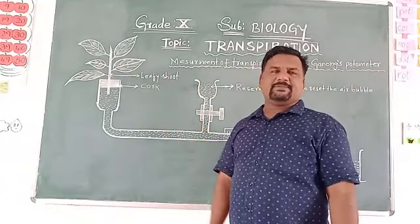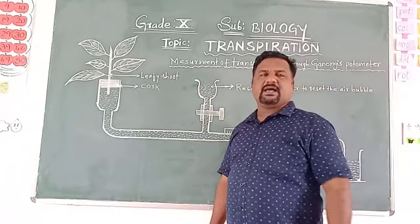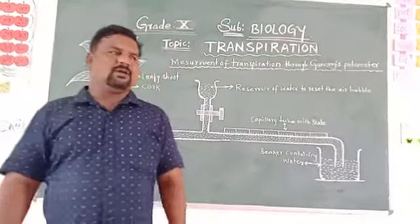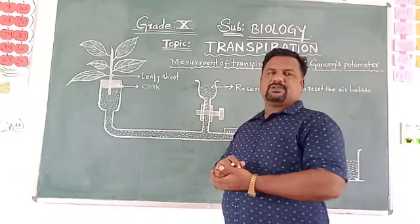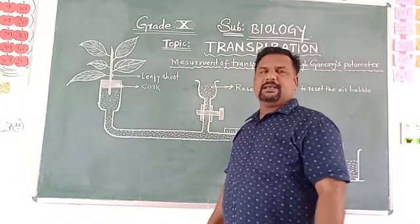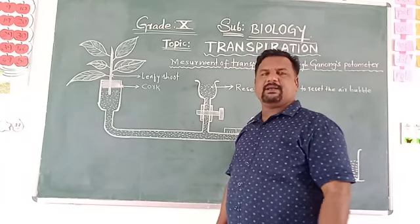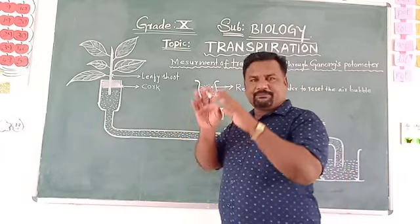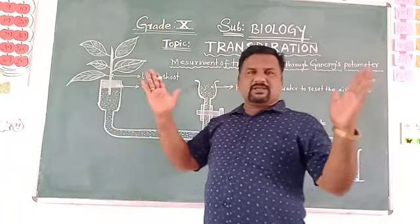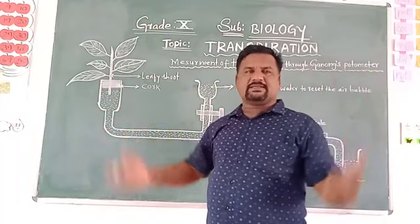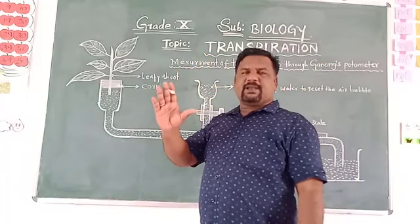We also discussed different types of transpiration: stomatal transpiration, lenticular transpiration, and cuticular transpiration. Stomatal transpiration takes place with the help of stomata — the tiny pores present on the surface of the leaf. The stomata are composed of kidney-shaped guard cells. The space between the guard cells becomes wider in the presence of sunlight, and when sunlight decreases the space becomes narrow.